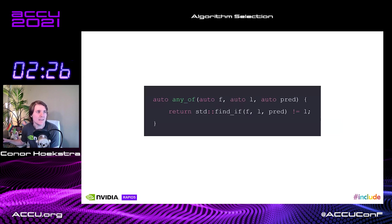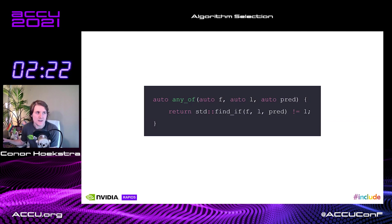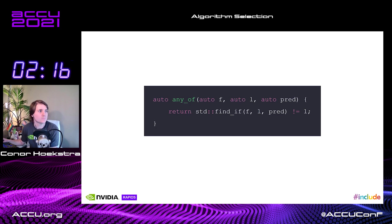Another example is any_of — this is the mistake that I made. I could have used any_of, but instead I wrote std::find_if not equal to the past-the-last-element iterator.